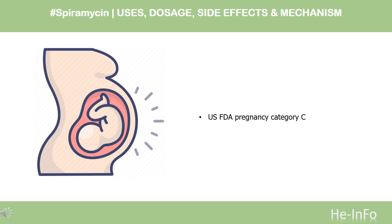Safety advice. Spiromycin is a pregnancy category C drug. If you are pregnant, think you may be pregnant, or are planning pregnancy, consult your doctor before taking spiromycin. Your doctor may prescribe this medicine only if the benefits outweigh the risks.